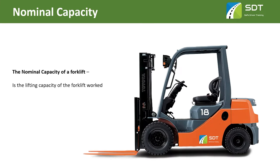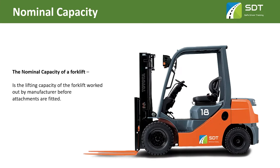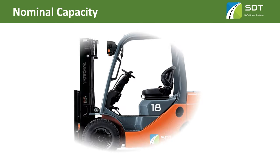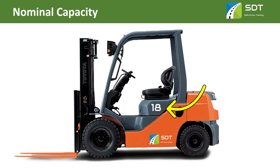The nominal capacity of the forklift is the capacity worked out by the manufacturer before attachments are fitted. On most forklifts, the model number indicates the nominal capacity. For example, a forklift with model number 18 can usually lift a maximum of 1.8 ton or 1800 kilograms — you just need to imagine a dot between the two numbers.